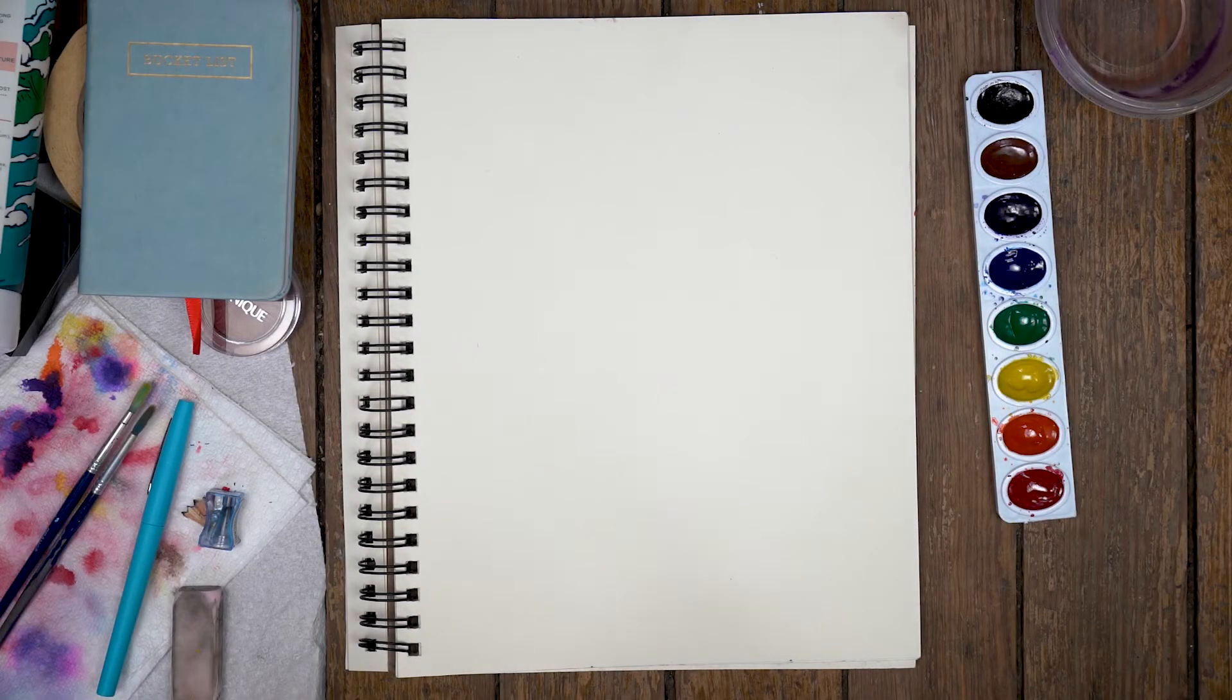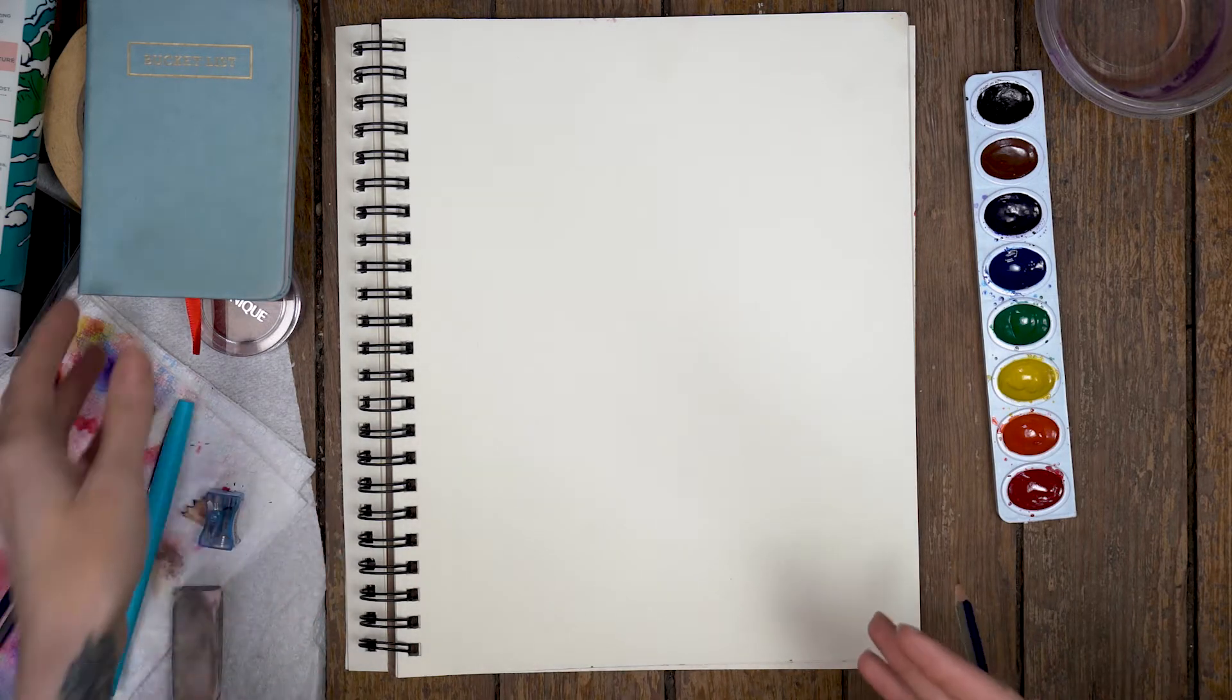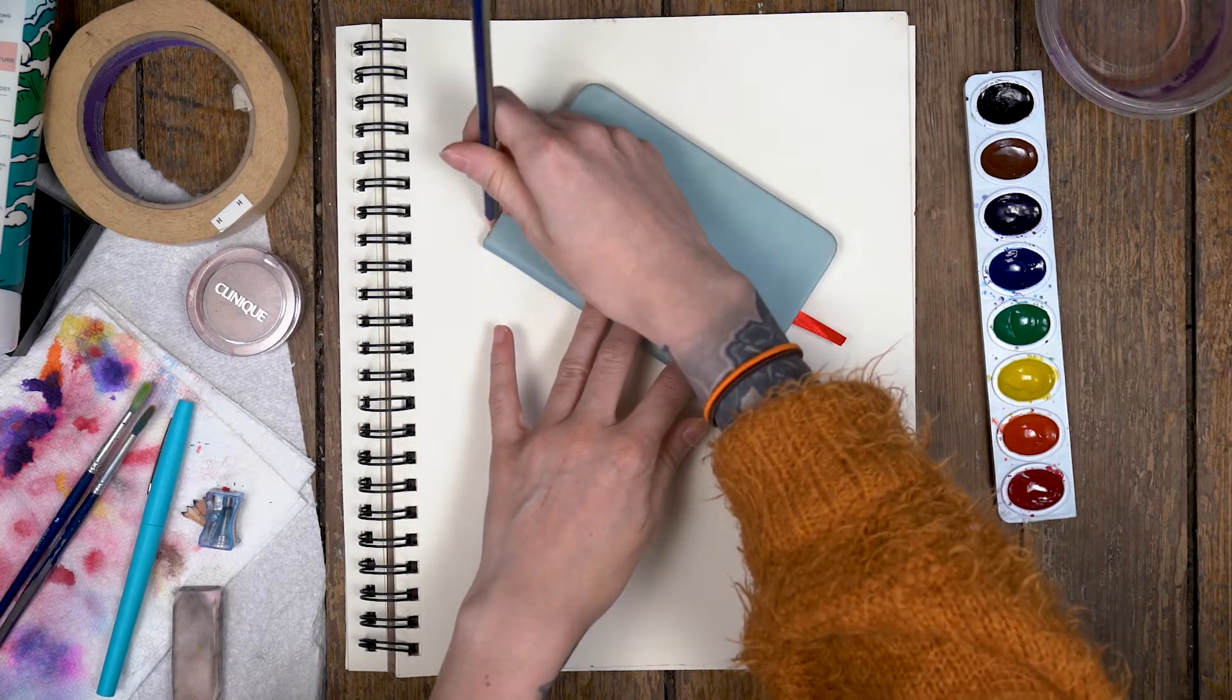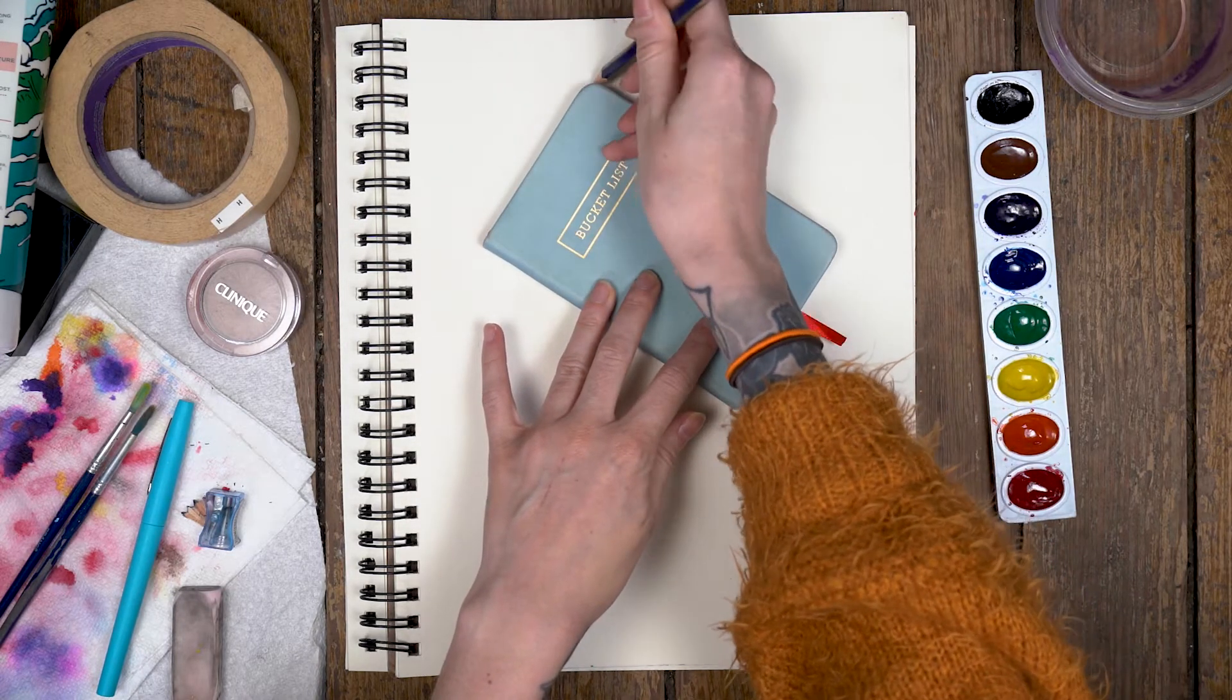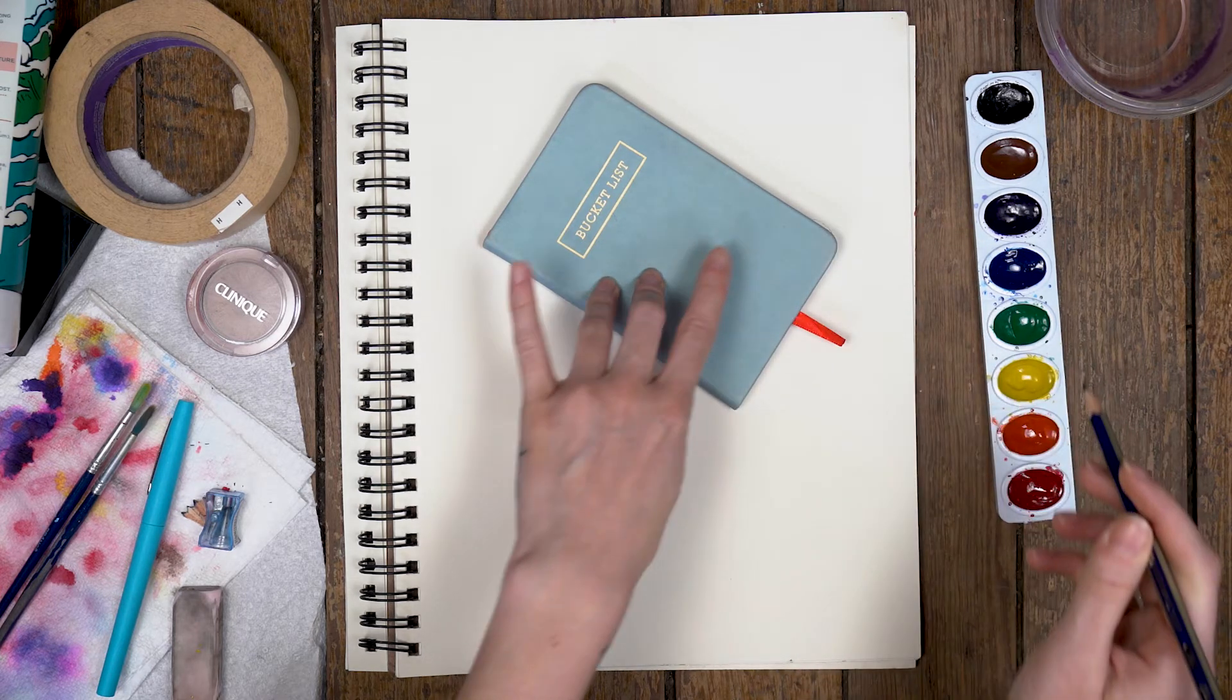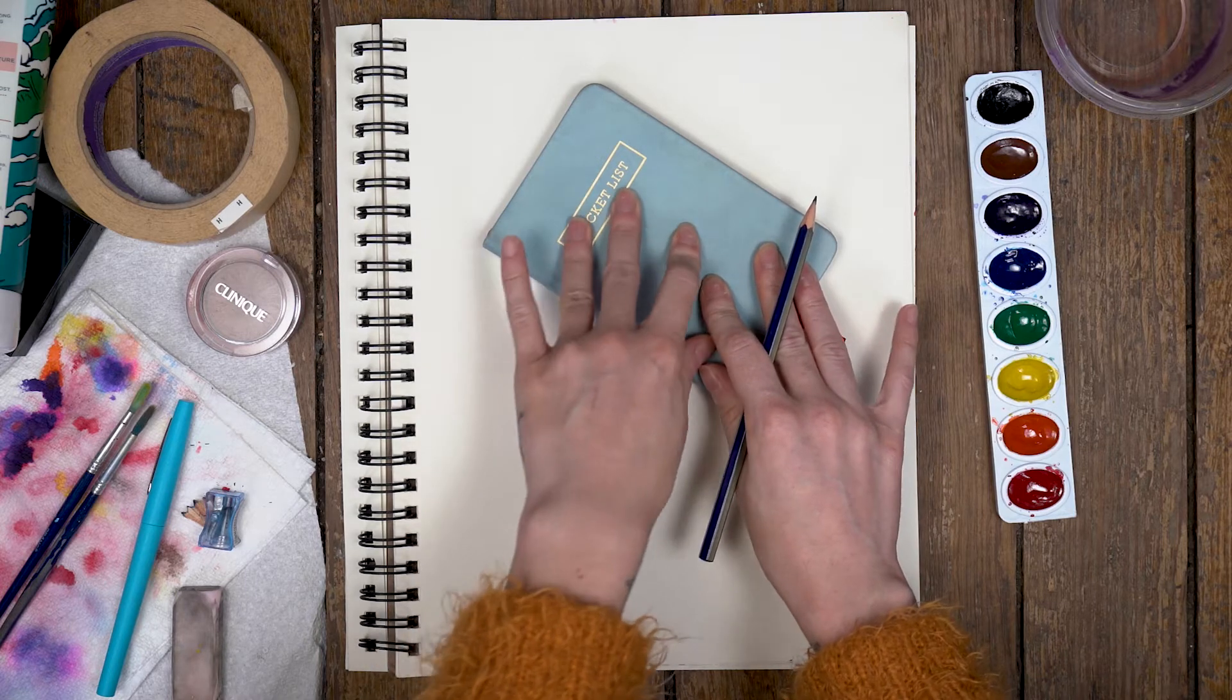The first thing we're going to do for this project is gather up some found objects because we're going to be tracing them. We really want to pay attention to the shapes. I like this shape because it's a nice rectangle, so I'm going to start by tracing this first shape. Notice how when I'm tracing it, I'm holding it down in place, trying not to move it around.